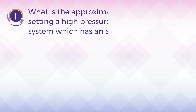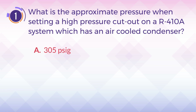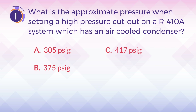Number 1. What is the approximate pressure when setting a high pressure cutout on a R410A system which has an air-cooled condenser? A. 305 PSIG. B. 375 PSIG. C. 417 PSIG. D. 610 PSIG.